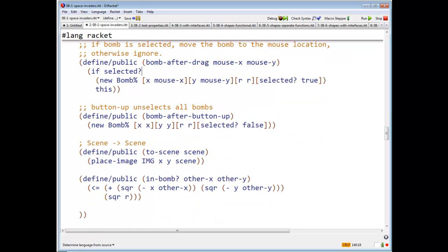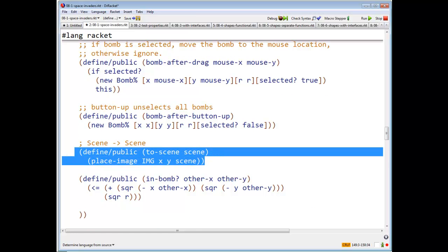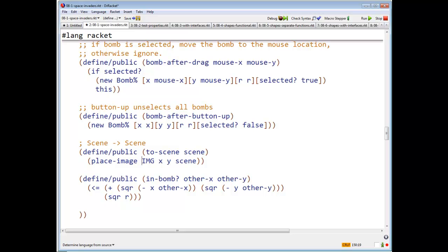How do I paint myself on the scene? I say, place image my image at my location on the scene, because that's what place image does. It creates a new scene that's like scene, the fourth argument, except that the image is added at location X, Y.